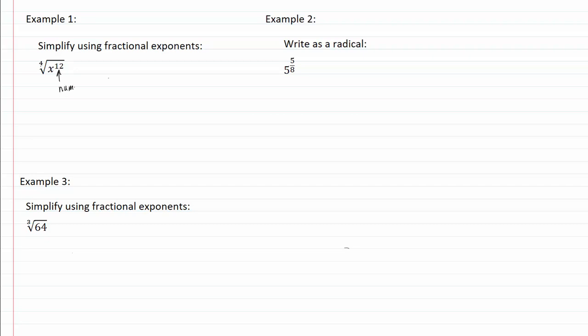This is our numerator, this is our denominator, so that means we have x to the twelve over four. Well, twelve divided by four is three, so this is going to equal x to the third power. And you can see how simple that is to do that way.